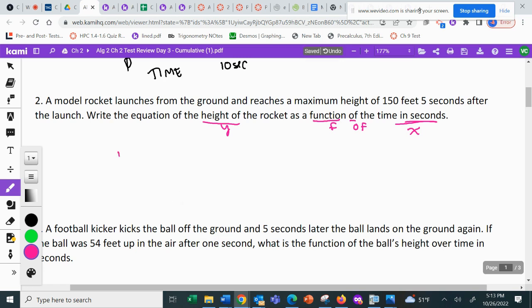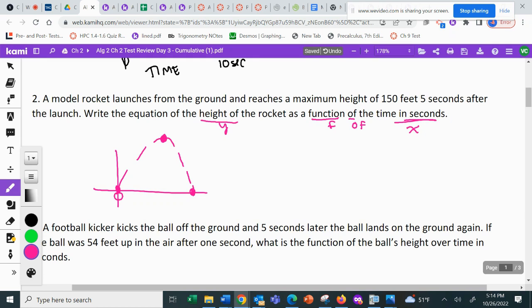The rocket starts on the ground. So I'm going to make this time zero. And I don't know when it hits the ground again, but I know it goes all the way up and comes all the way down again. What I know is the maximum height that this rocket reaches is 150 feet after five seconds. So five is the time and 150 feet would be the height. So that's to get you started. We have to write the equation with the given information.